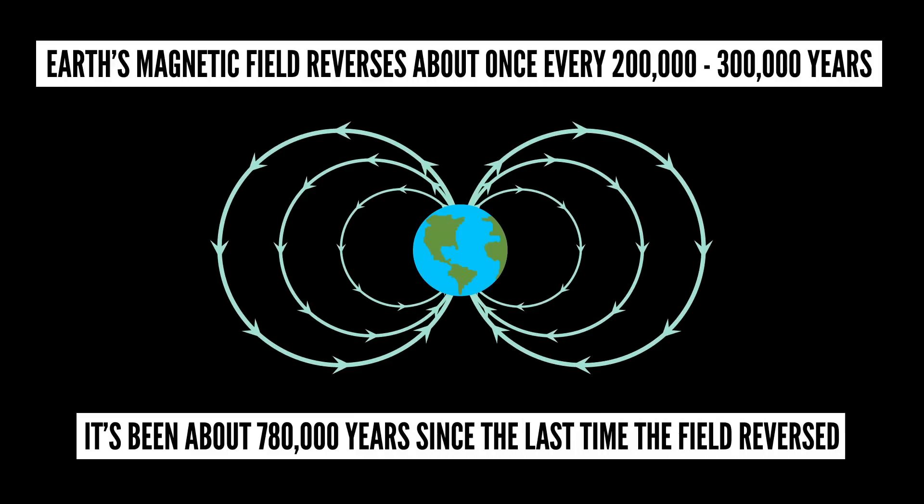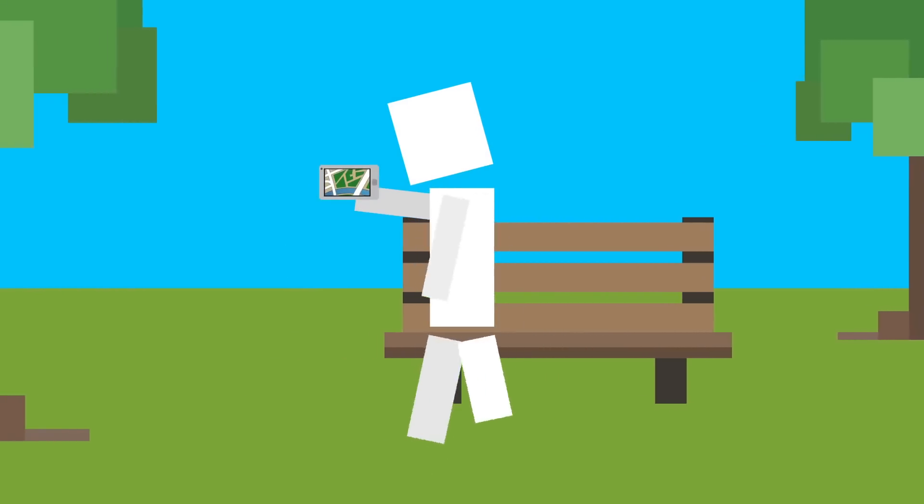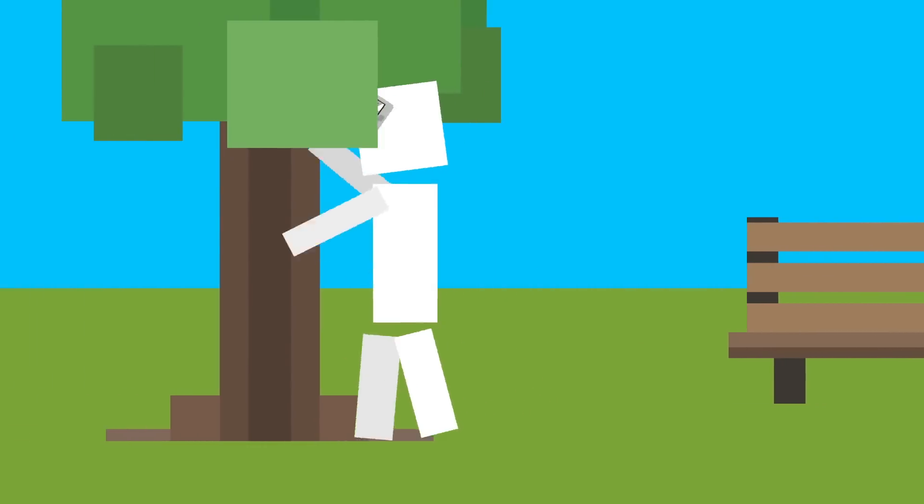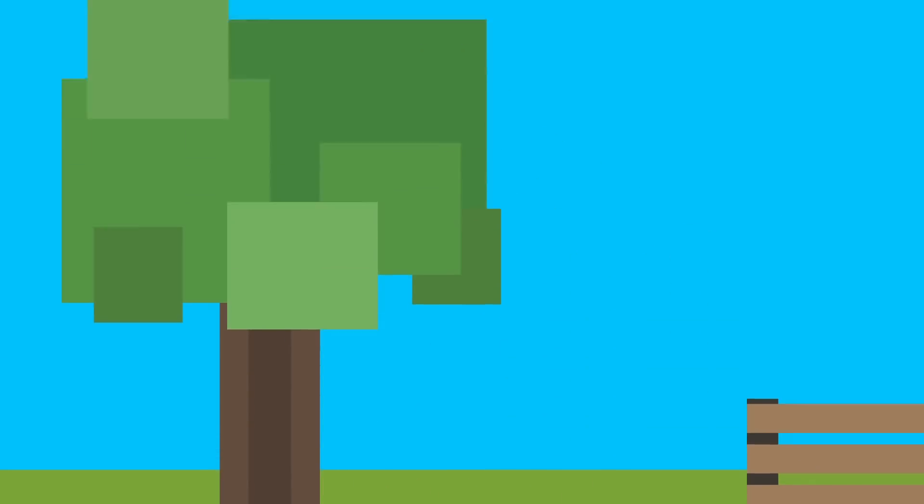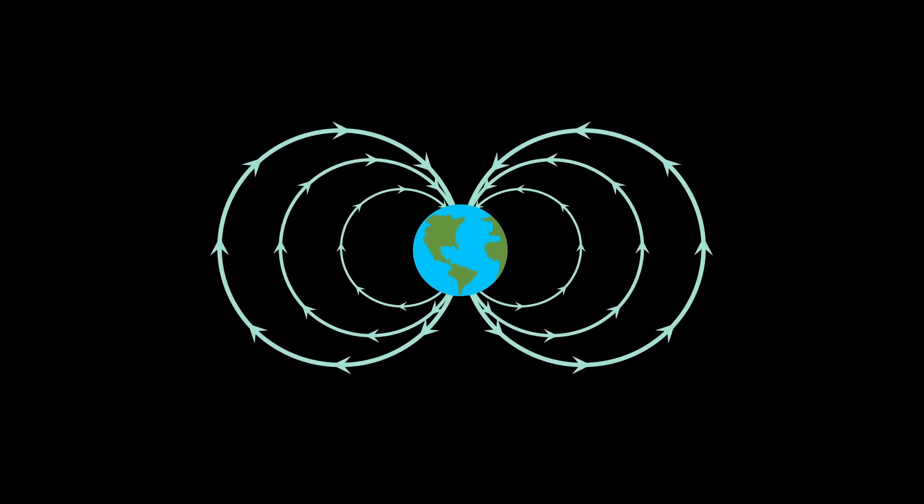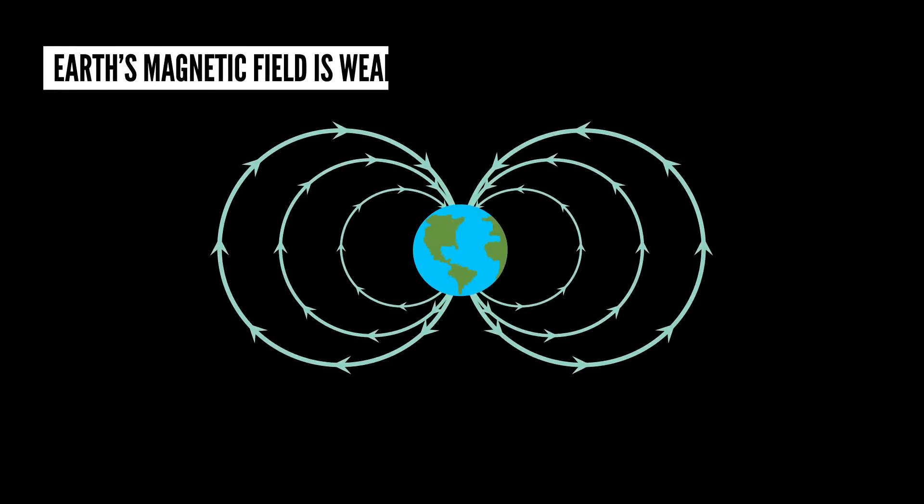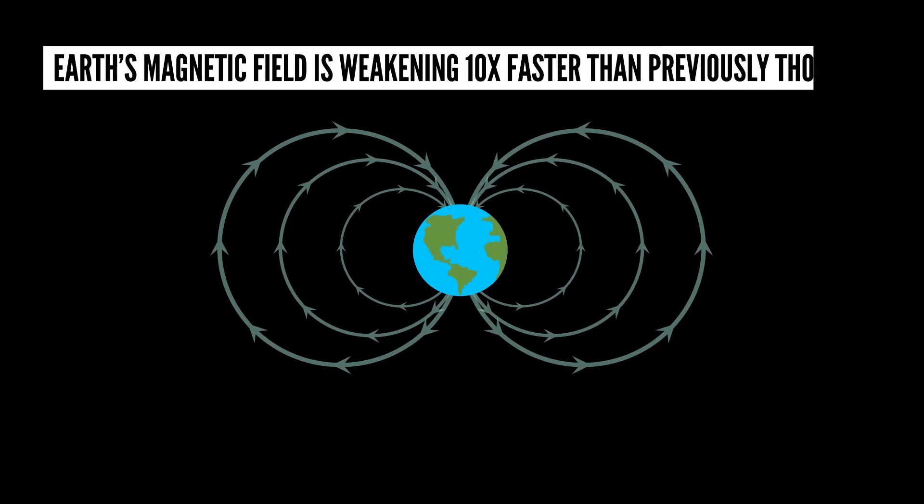However, when it does happen, it doesn't just reverse instantaneously. You won't walk outside one day and Google Maps will have no idea which direction is which. Instead, this reversal takes hundreds if not thousands of years. Recent research by the ESA shows that Earth's magnetic field is weakening at a rate 10 times faster than previously thought.